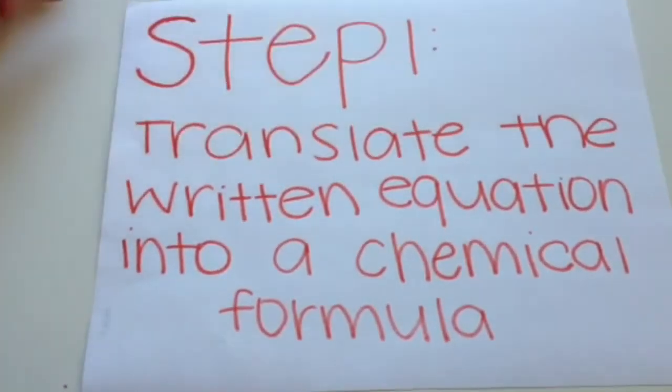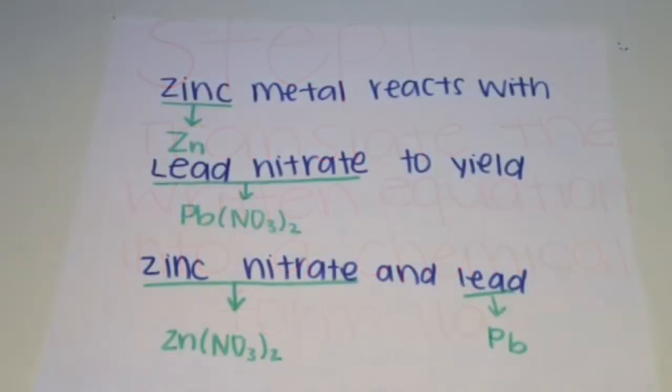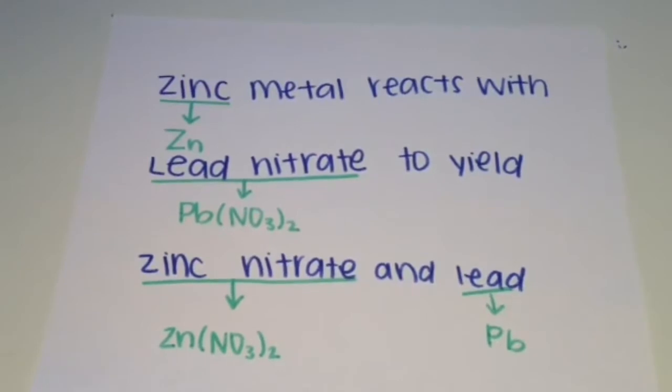The first step in balancing a chemical reaction is to translate the written equation into a chemical formula. The equation we're going to use today is zinc metal reacting with lead nitrate to yield zinc nitrate and lead.